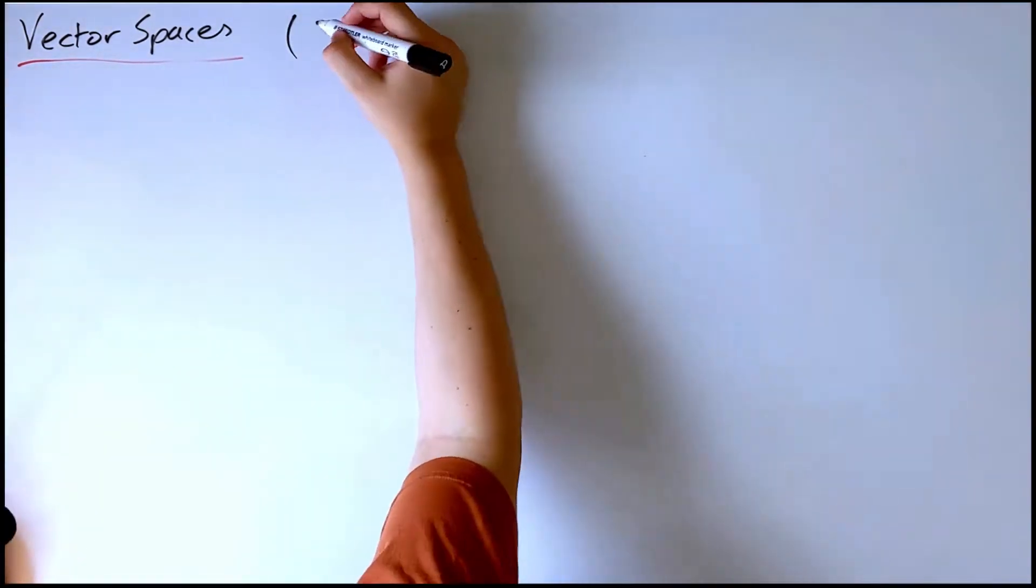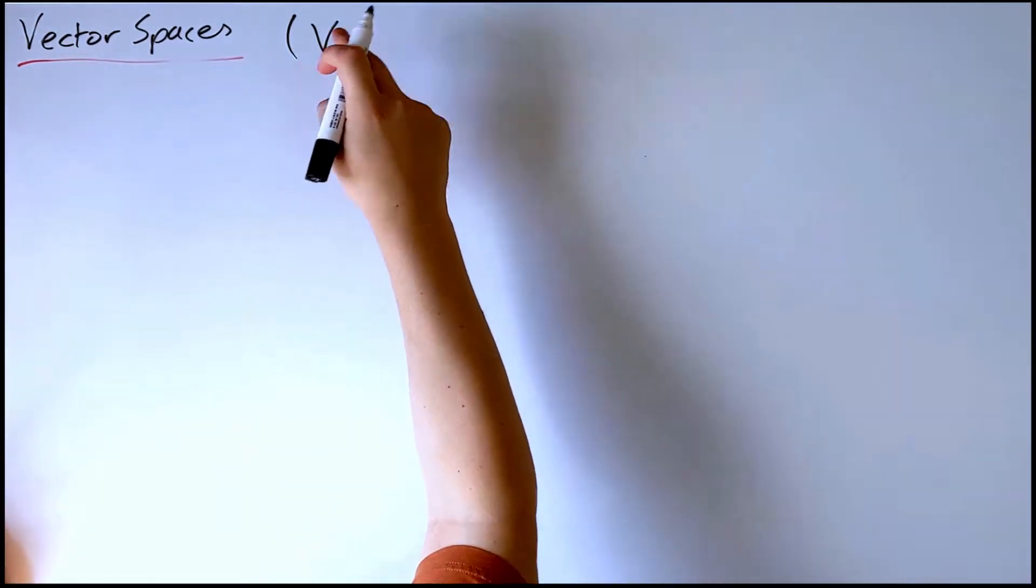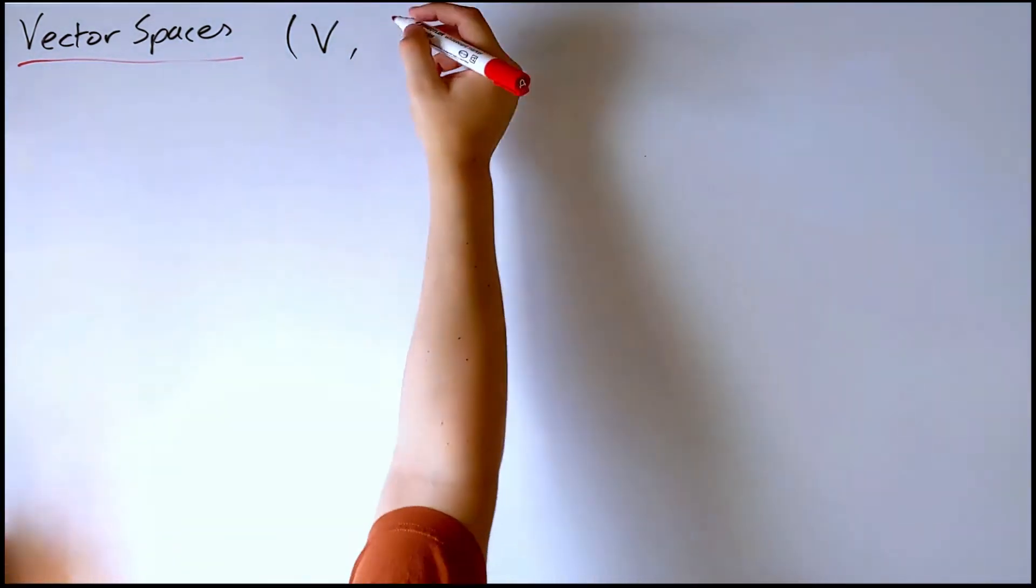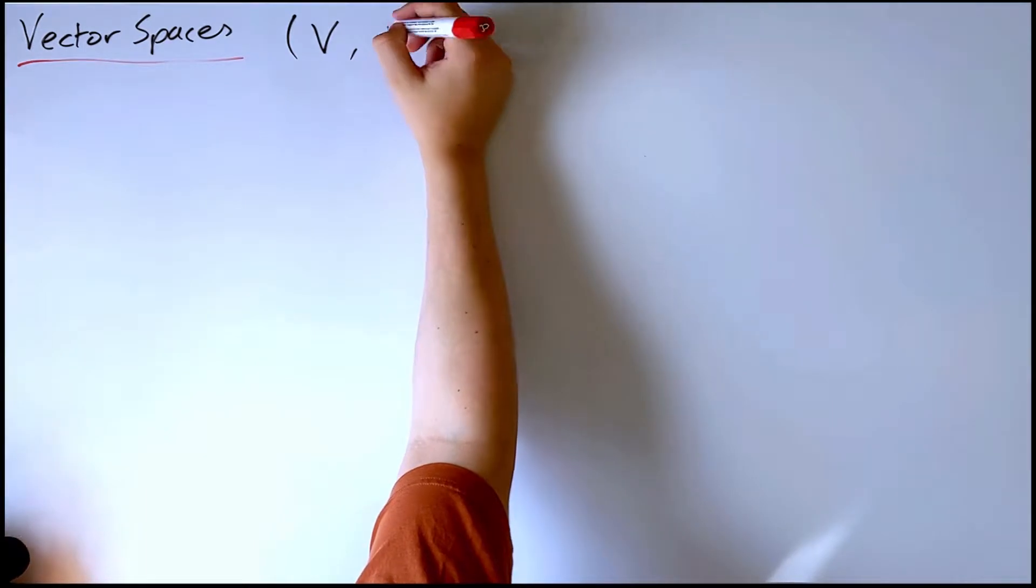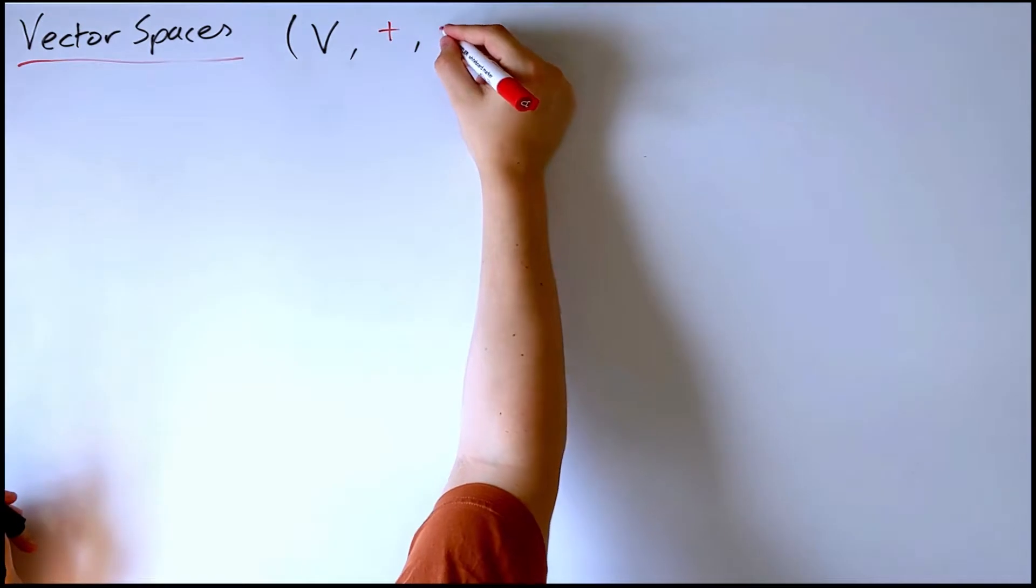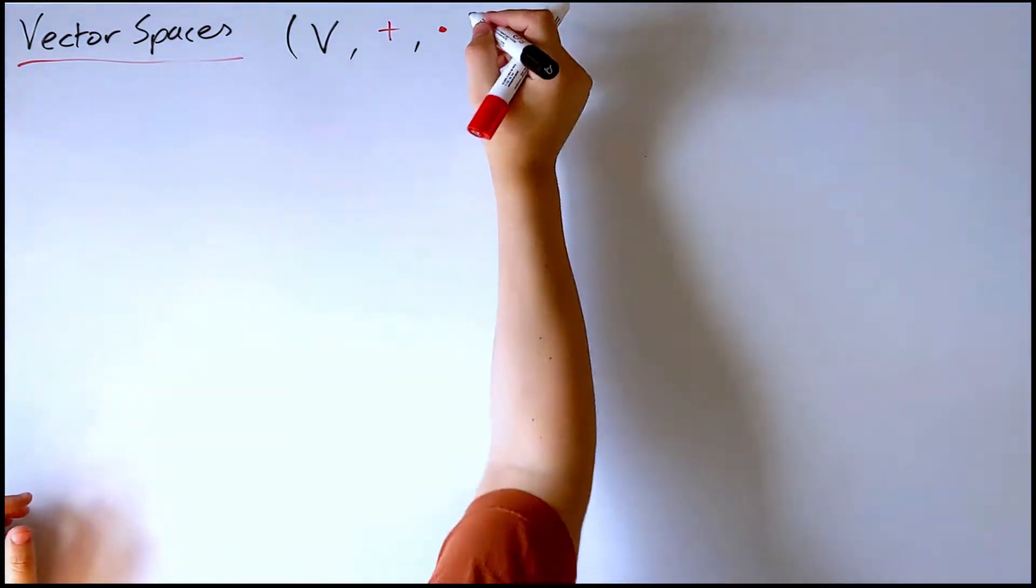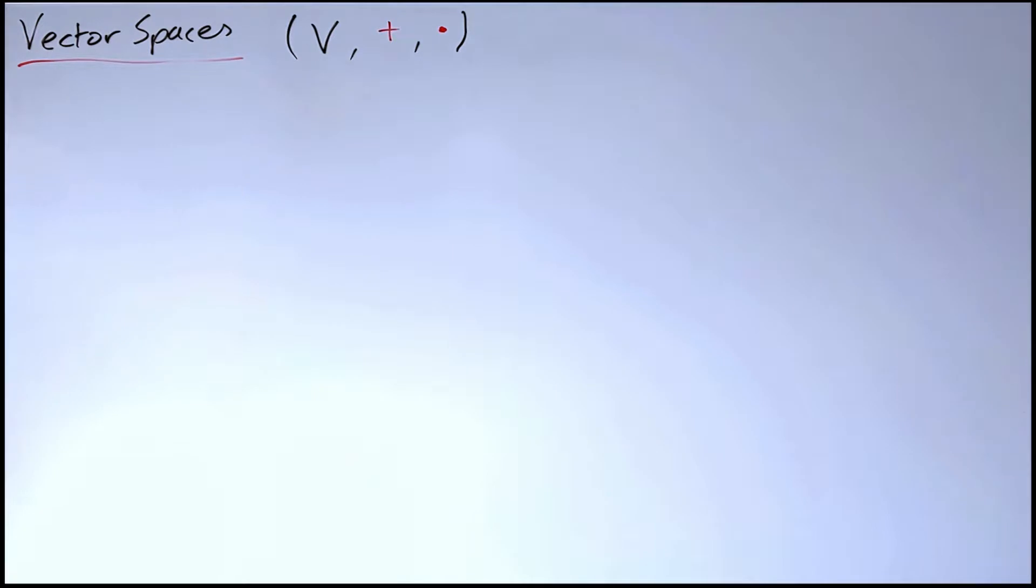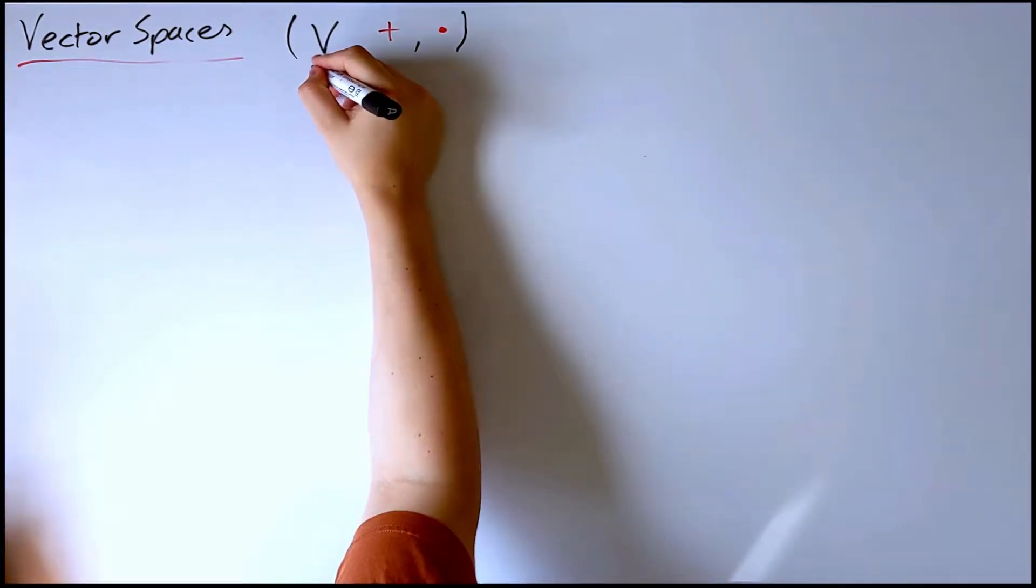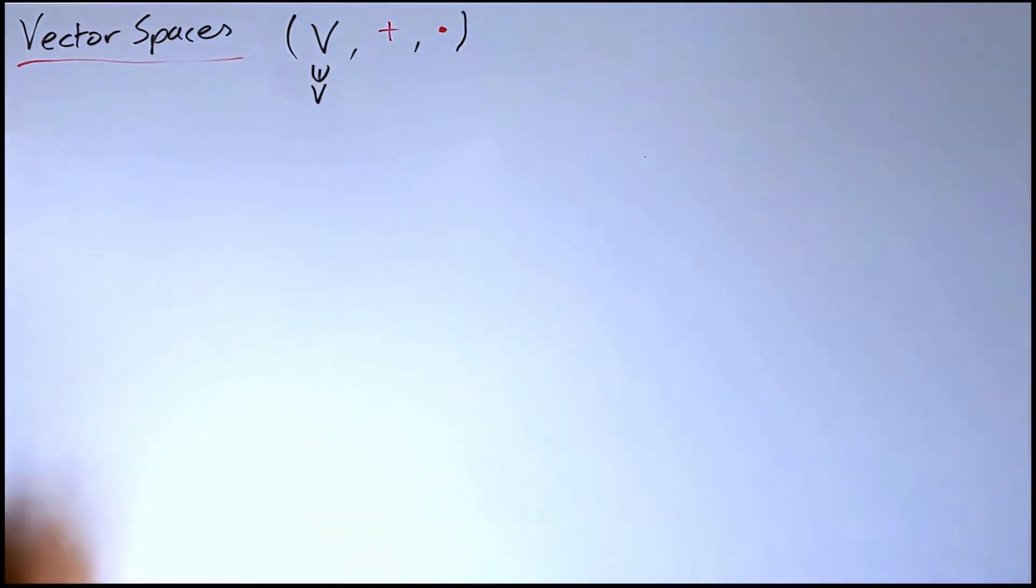So now we can define a vector space. A vector space, which I'll call V, that's the underlying set, is the underlying set V taken together with two operations, which I'm going to call vector addition and scalar multiplication. I'll explain exactly what I mean by scalar in a second, but for now let's focus on the vectors. So the vectors themselves are the elements of this set V. So I'll call a vector little v.